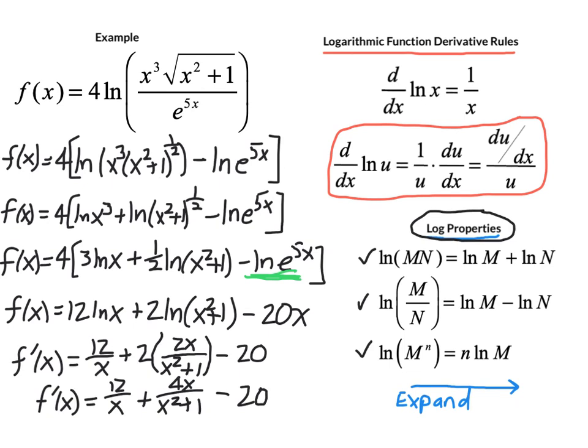Ultimately the log derivative rules both the simple and the general one were used here to find this derivative, but the critical point in this example is to pull that function apart using your log properties before you take the derivative. When you start seeing the log of something messy on the inside of it take a second and do your prep work and then the derivative itself should be the simple part.